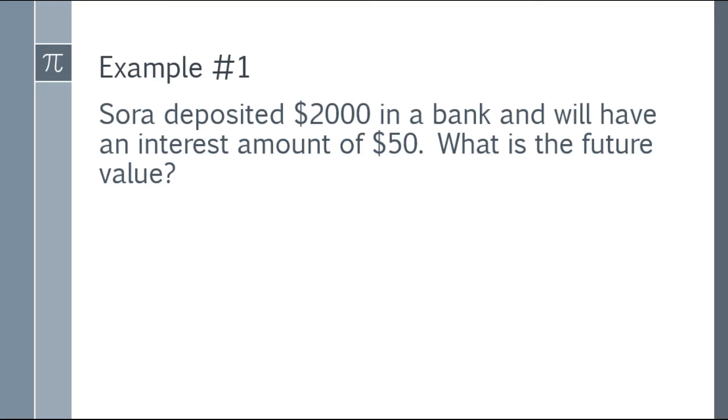Alright, so let's have an easy one. Example number one. Sora deposited $2,000 in a bank and will have an interest amount of $50. What is the future value? So we have the principal because she deposited money, and we'll have an interest amount of $50. So from the word itself, interest amount, so that's the I in our formula.